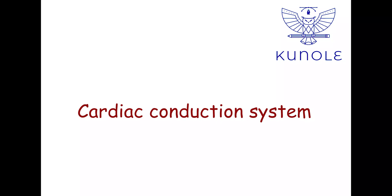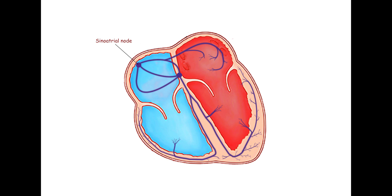In this video, we will talk about the cardiac conduction system. Normally, the sinoatrial node generates an impulse that spreads throughout both atria, depolarizing them.